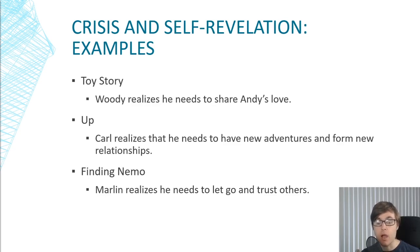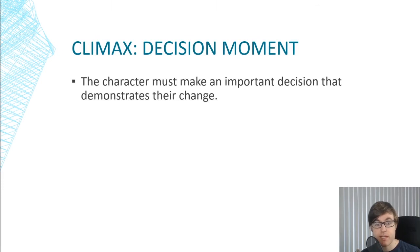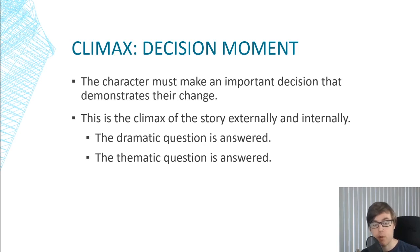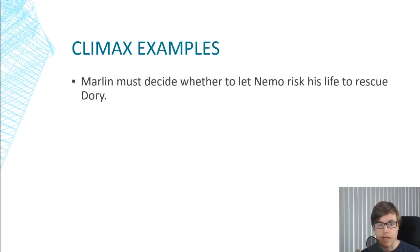That brings us to the climax of the story — the great decision moment. This is where the character has had their self-revelation about what they need to do to live a better life, but now they need to make an important decision and demonstrate through change that they've learned their lesson. This is the climax both externally and internally — we find out whether the character gets what they've wanted since the end of Act One, and whether they're able to adopt this new approach to life. It's also worth noting that the crisis and self-revelation mark the end of Act Two, so the climax is in the middle of Act Three.